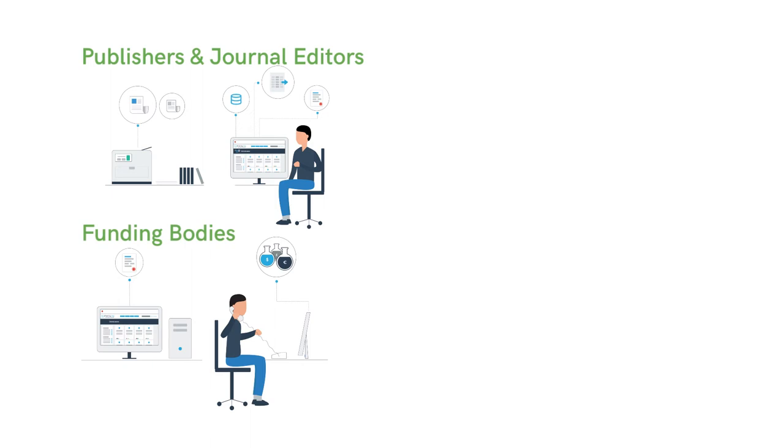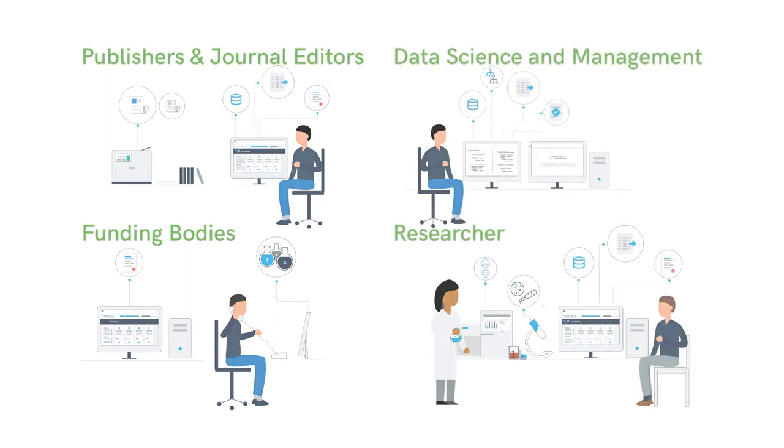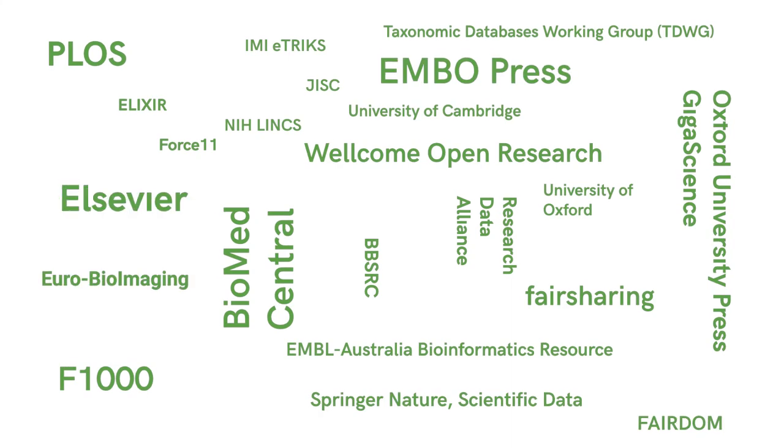FAIR is a set of principles providing guidelines for publishing different digital research outputs or digital assets — being a dataset, being a code, being an algorithm or a paper, a slide or a thesis. The principles have been designed by a set of stakeholders including publishers, funders, as well as researchers and people working in data science, and they've been widely adopted by the stakeholder community.